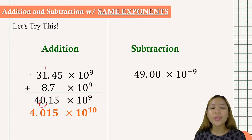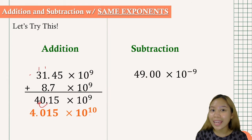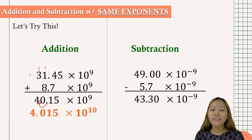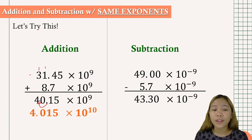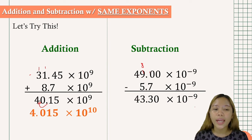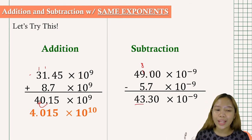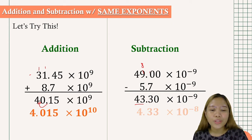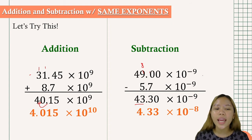Now for subtraction, we have 49 times 10 to the negative 9th minus 5.7 times 10 to the negative 9th. We get 43.30 times 10 to the negative 9th. We borrow 1, so 10 minus 7 equals 3, and 8 minus 5 equals 3, bringing down the 4. Since we have two whole numbers, we move one place to the left, giving a final answer of 4.33 times 10 to the negative 8th.